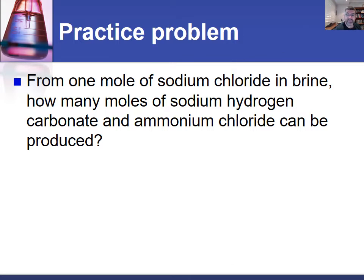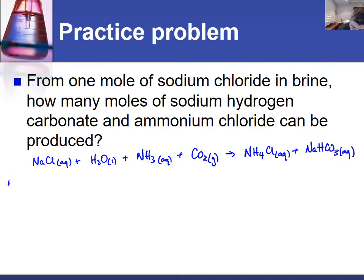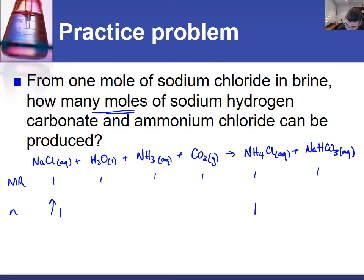From one mole of sodium chloride in brine, how many moles of sodium hydrogen carbonate and ammonium chloride can be produced? In the brine reaction, we have NaCl with water, ammonia in solution, and CO2 bubbled through, producing ammonium chloride in solution and sodium hydrogen carbonate in solution. The equation is already balanced with a 1:1:1:1:1 ratio throughout. So from one mole of NaCl, we get one mole of NaHCO3 and one mole of NH4Cl.